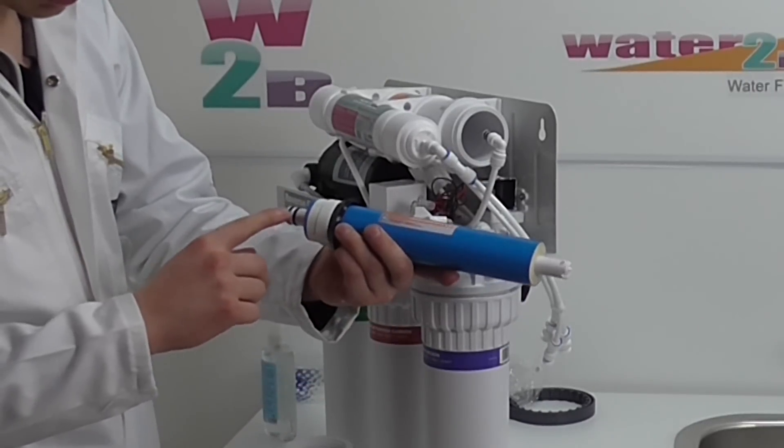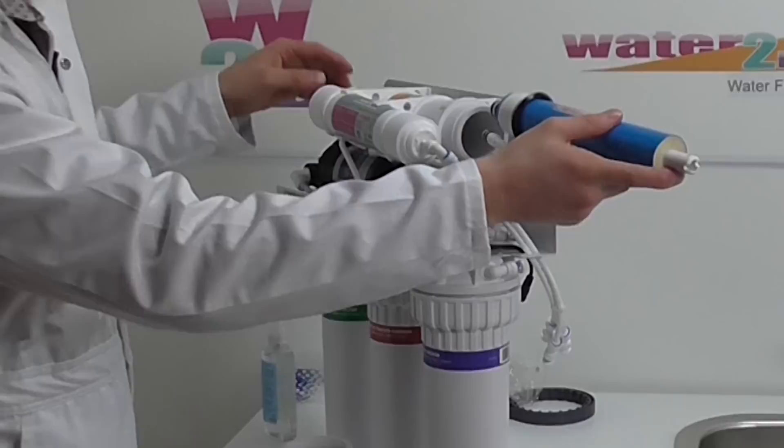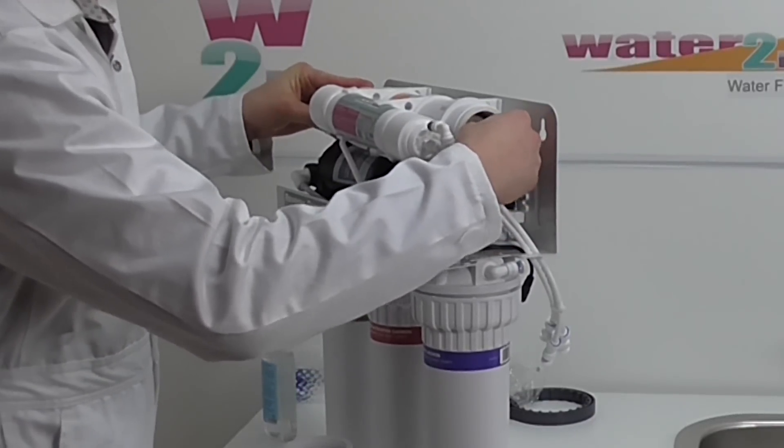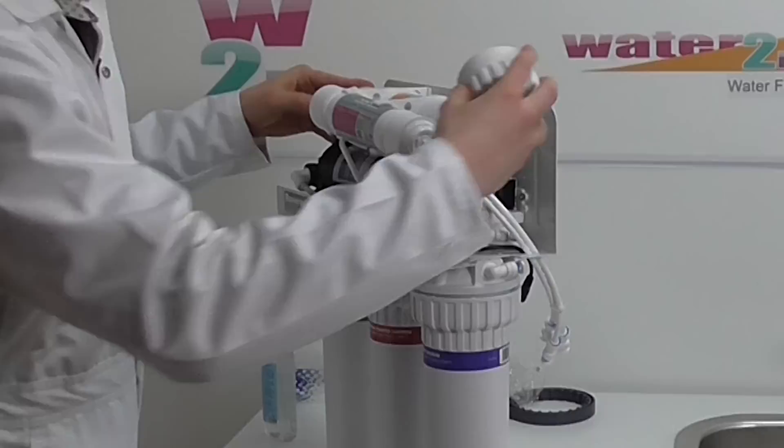Always insert the end of the membrane with the two black rings first. The position of the collar around the membrane can vary depending on the model. It may be at either end of the membrane. Push in the membrane firmly and make sure it sits securely in place.